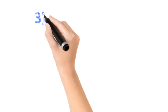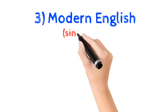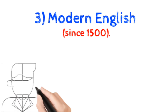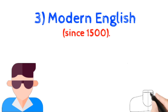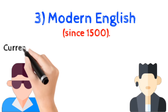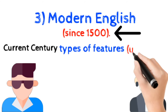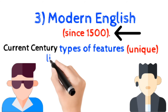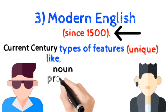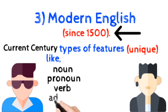Number 3: Modern English, since 1500 AD. Modern English is the English which is still used in the current century. It started from 1500 AD and has some features that make it unique.